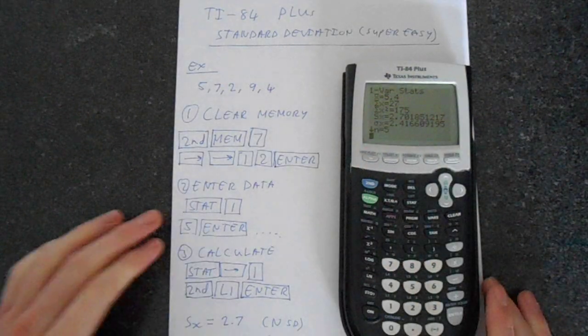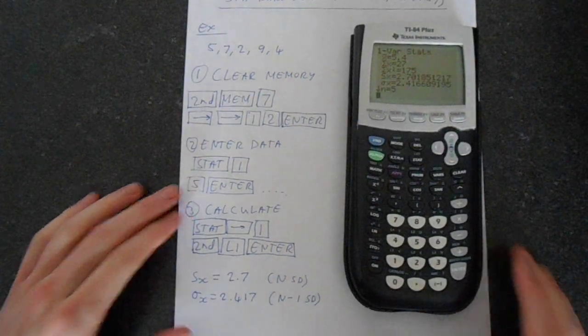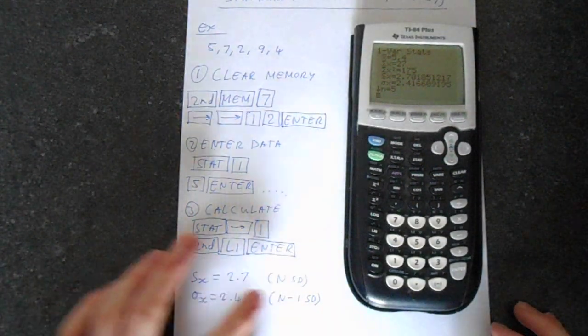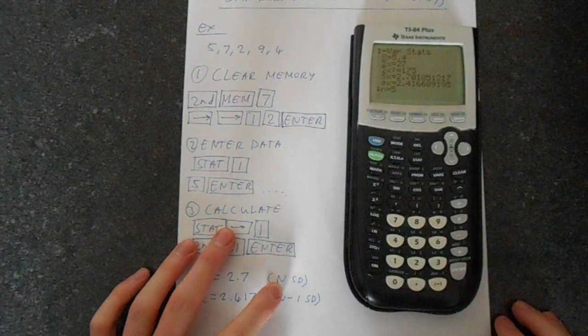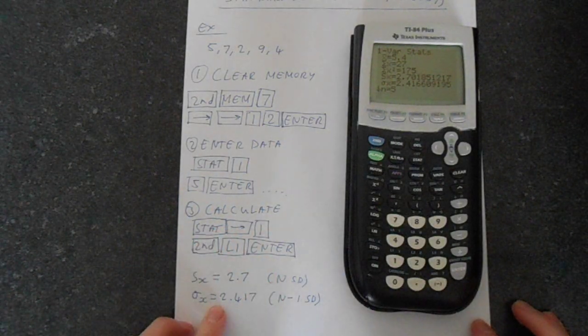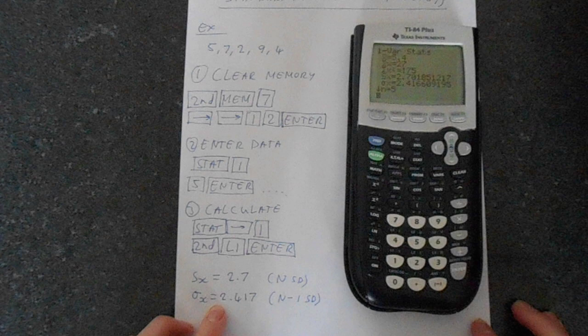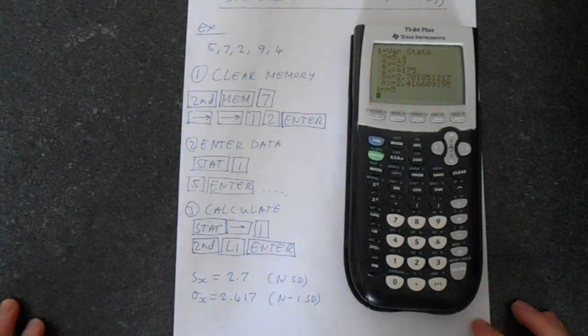you've got Sx. Now move this down a little bit. Sx is the n definition of standard deviation so it's dividing by n and the other one, this sigma x, is when you divide by n minus 1.